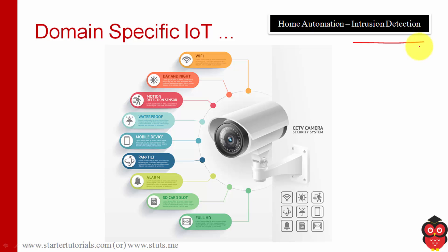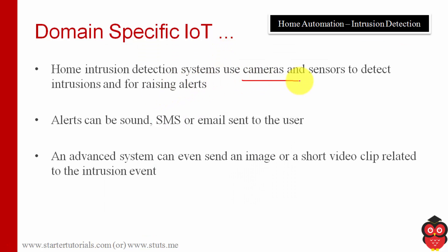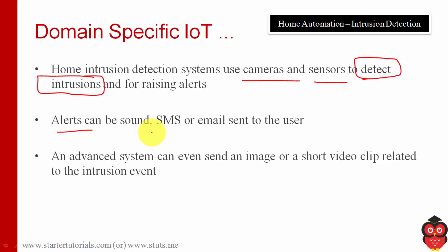The next application in home automation is intrusion detection. We can use CCTV cameras outside and inside the home, connected to the internet through Wi-Fi, and you can monitor what is going on from a remote location. The intrusion detection system uses cameras equipped with sensors whose main purpose is detecting intrusions, and they send alerts — through sound, SMS, or email — if something happens. An advanced system can even send an image or a short video clip.